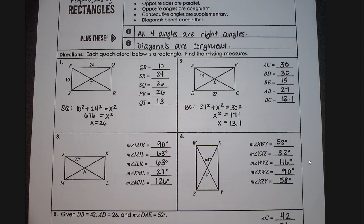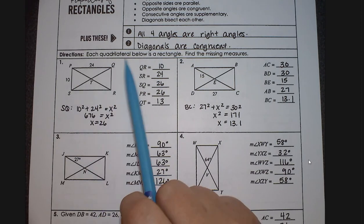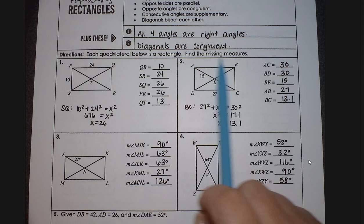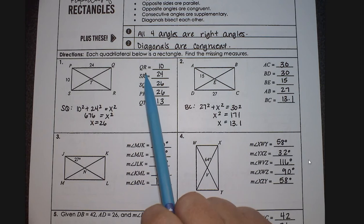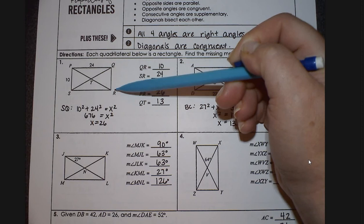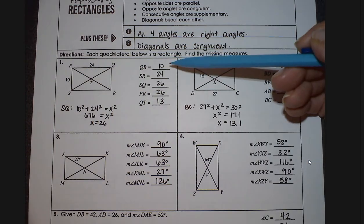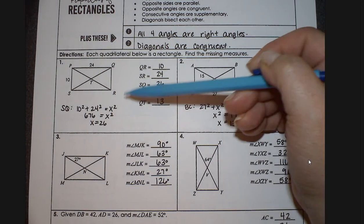Today we're going to add some algebra into the relationships. So when we're looking at this situation here, it says each quadrilateral is a rectangle. Find the missing measure, and it's asking you to find the length of QR. So when you're looking at this, QR, we want to remember that it's congruent to the opposite side. So this is pretty easy. QR is going to be 10, SR is going to be 24.